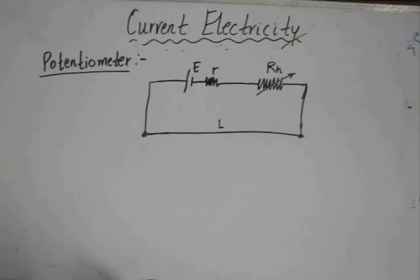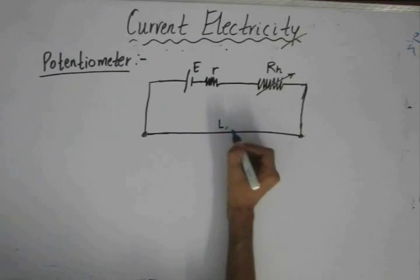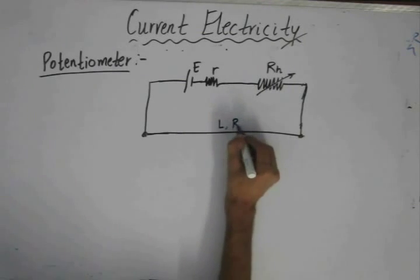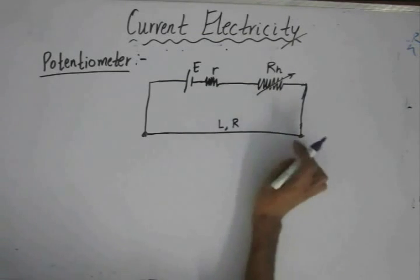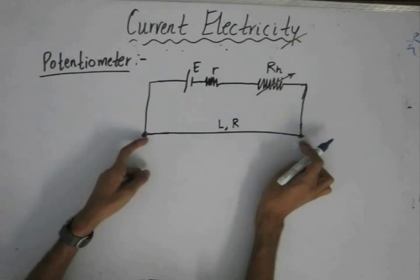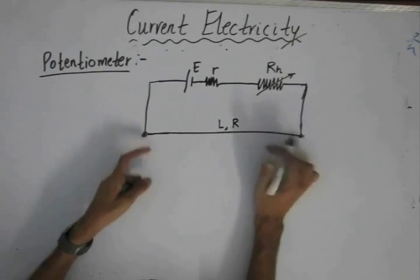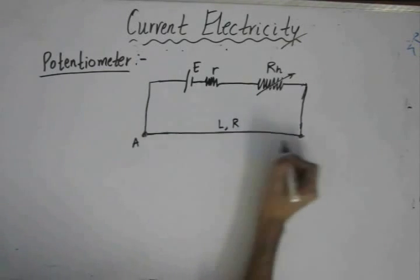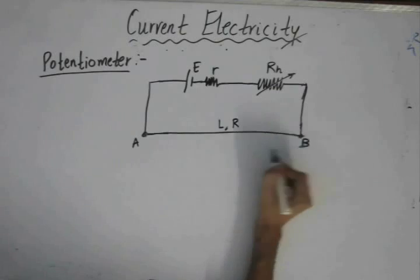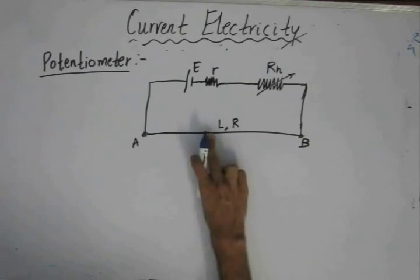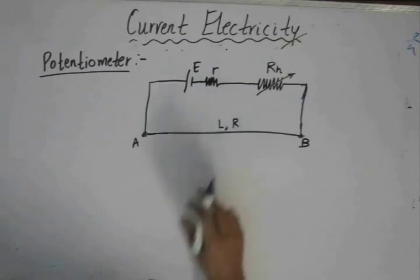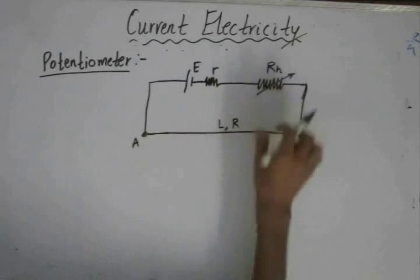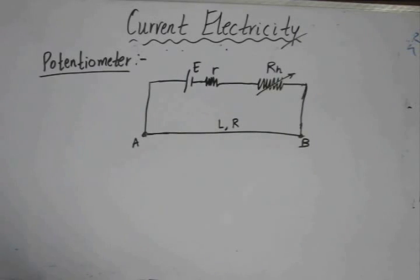Generally, the alloy used for making the potentiometer wire is Manganin or Constantan. The resistance associated with the entire length L of the wire — between points A and B — let us suppose it is R. So between the points A and B, we have connected a potentiometer wire of length L and resistance R. This is the primary circuit of a potentiometer.